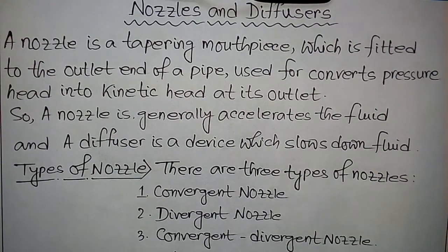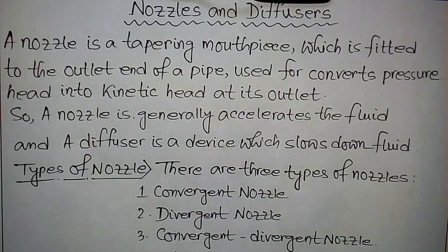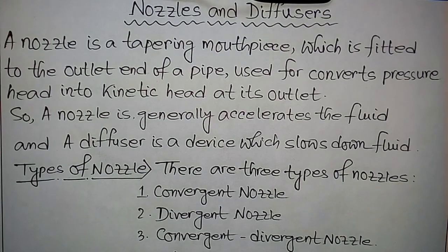In this video, I discuss nozzles and diffusers — their definitions, types, and applications. Generally, a nozzle is a tapering mouthpiece fitted to the outlet end of a pipe, used to convert pressure head into kinetic head at its outlet. A nozzle generally accelerates the fluid.